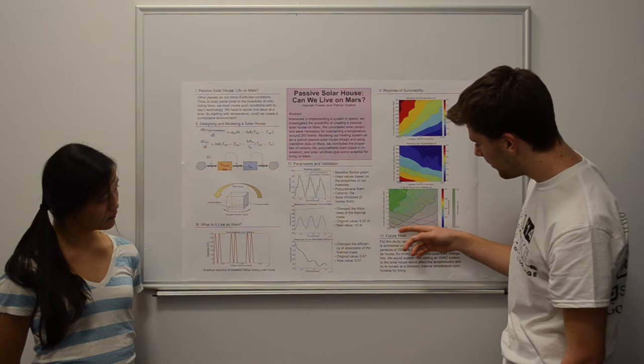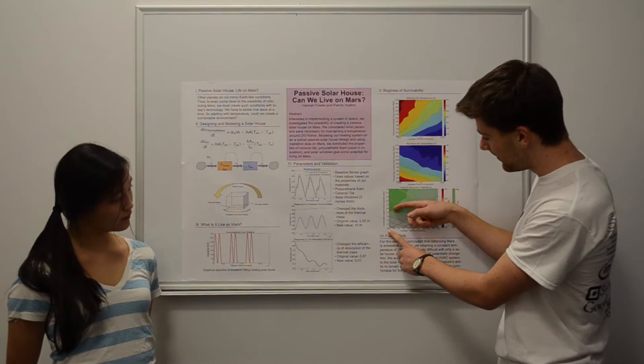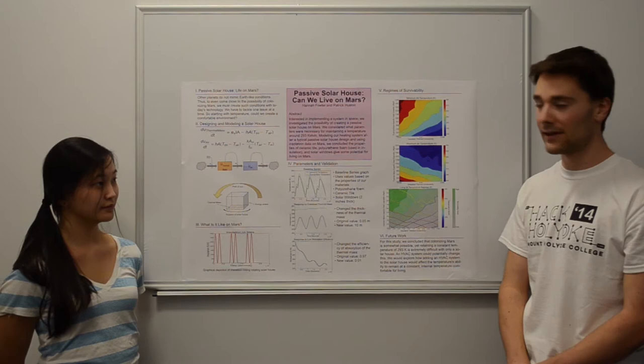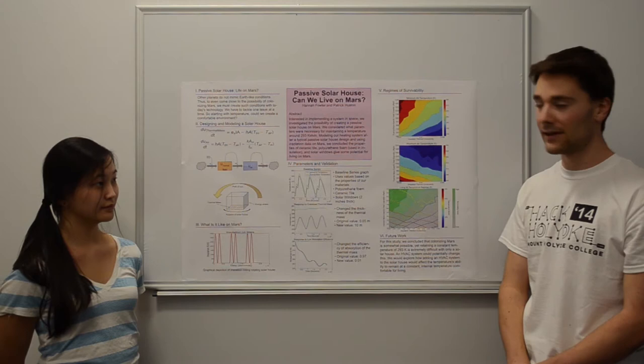So this is where you could survive, and that's approximately 0.025 to 0.028 thermal conductivity of the insulation and about 1000 to 1500 as the specific heat capacity for the thermal mass. And we looked into this, and these values are reasonable. So we could say that you could survive inside a passive solar house on Mars as we modeled it.